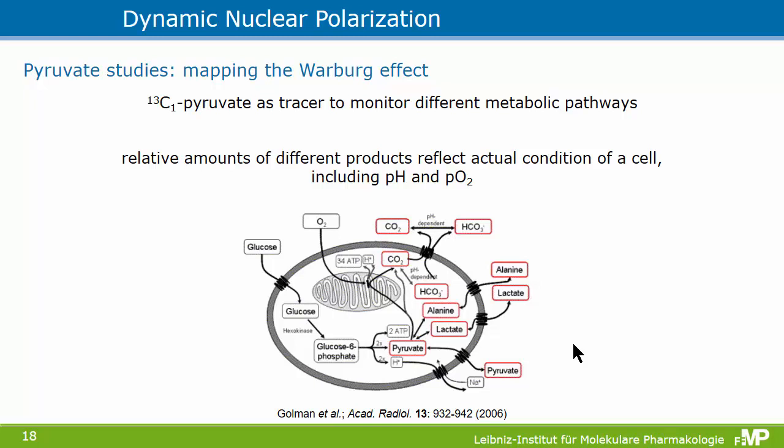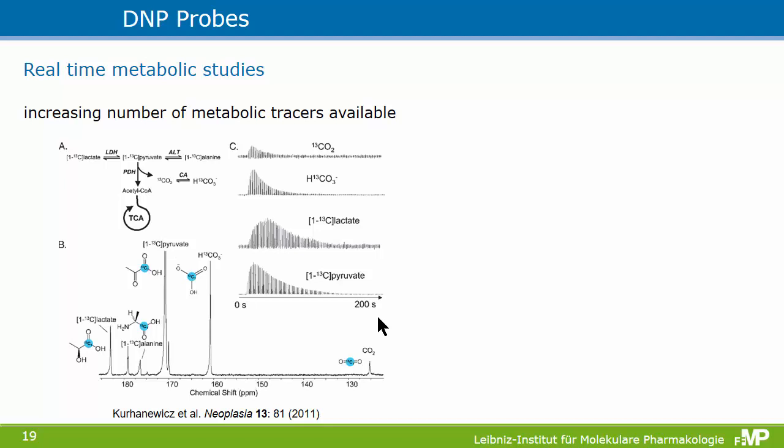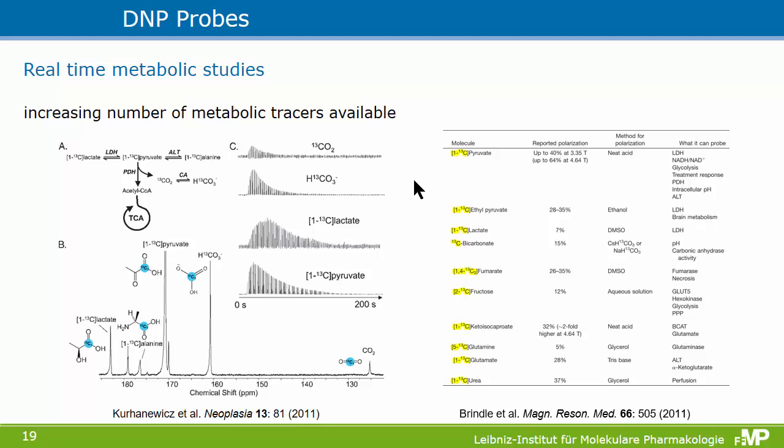The typical applications are metabolic studies where you administer hyperpolarized pyruvate and observe the conversion into lactate and alanine, but also the pH-dependent conversion between CO2 and bicarbonate. Here are typical examples from the review I mentioned: you administer pyruvate and see the metabolic conversions into lactate and the other products. There is an increasing number of C13-labeled tracers now available, all addressing different mechanisms, for example like lactate dehydrogenase.